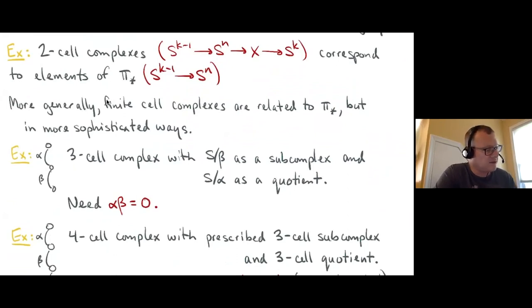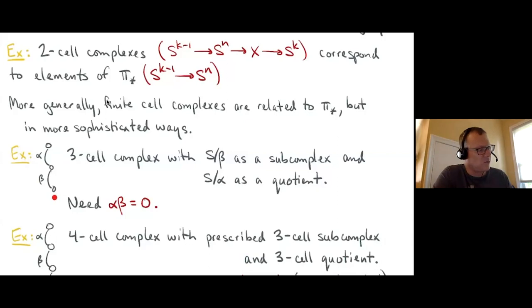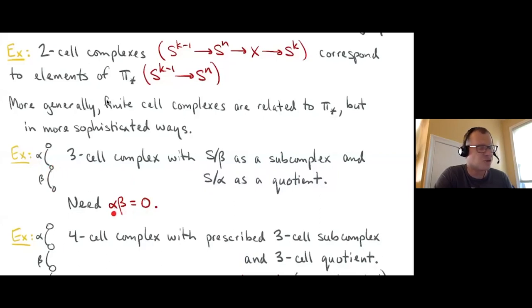As an example, let's look at a three-cell complex. I want to build a complex that has the two-cell complex associated to beta as a subcomplex at the bottom, and the two-cell complex associated to alpha as a quotient at the top. You can do this sometimes, but there's an obstruction: you need the composition alpha times beta, as endomorphisms of the unit object, to be zero. That's the obstruction to constructing such a three-cell complex.